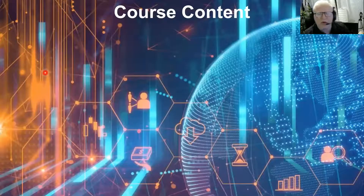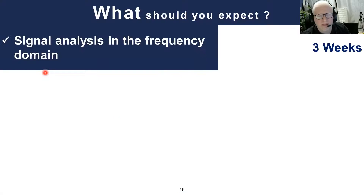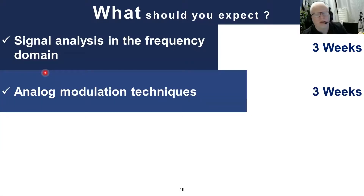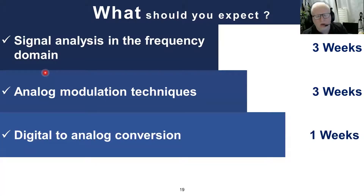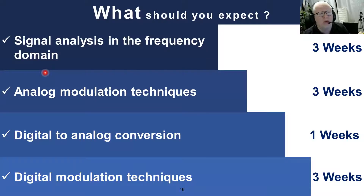Let's go to the course content. As mentioned, it has three parts. The first part — signal analysis in the frequency domain — we expect to cover in three weeks. Then analog modulation techniques, about another three weeks. Then digital-to-analog conversion, one week. And finally digital modulation techniques, three weeks. This totals ten weeks because we will use one intermediate week for revision just before the in-class test.